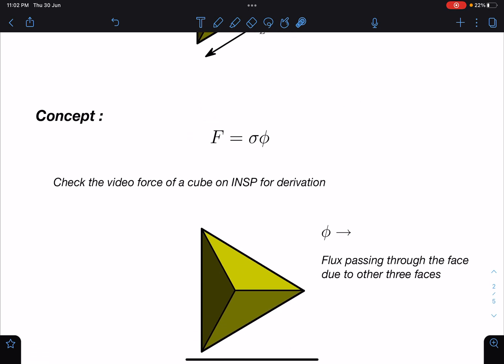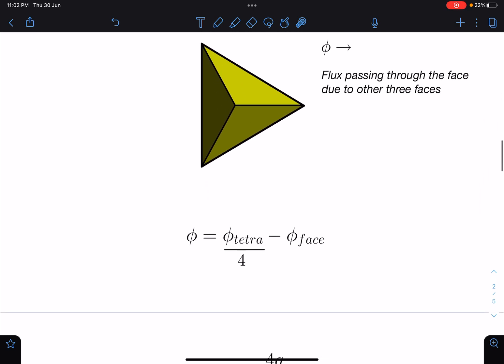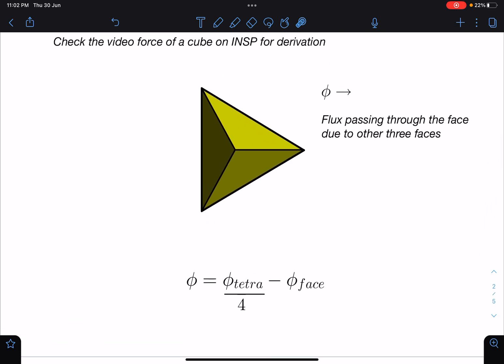Now another thing is what is this phi actually. So phi is flux passing through that surface where force have to be calculated due to the remaining 3. If you see this tetrahedron, we know the total flux passing through this and that is total charge by epsilon naught, but only one fourth of it will be passing through this.